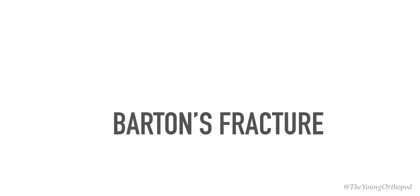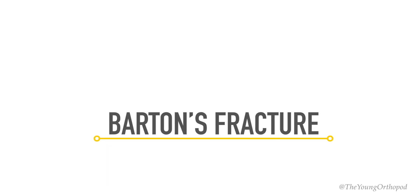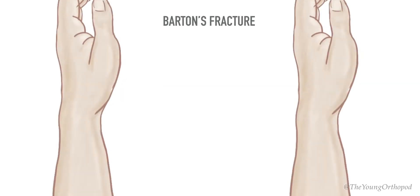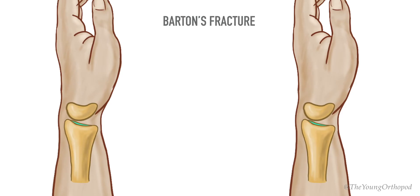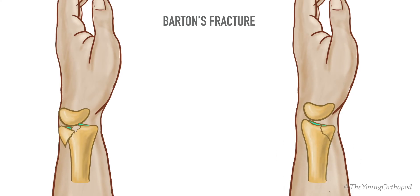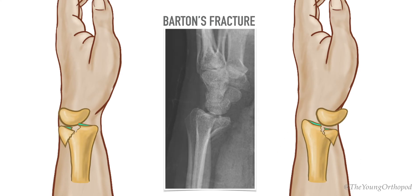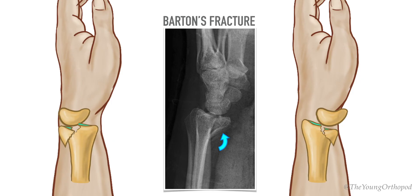The Barton's fracture is named after John Rhea Barton. It is an intra-articular fracture through the distal articular surface of the radius, where the dorsal or volar rim of the distal radius is displaced along with the hand and carpus. The mechanism of injury is a shearing force resulting from a fall on an outstretched hand.